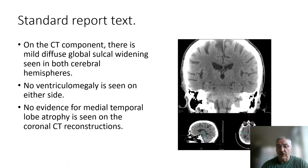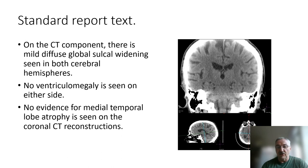The third component of the report will be an assessment of the CT scan. We're going to look for sulcal widening — mild, moderate, or severe — and any variation in lobar distribution. We're going to look for ventriculomegaly, and we're going to look at medial temporal lobe atrophy using the Scheltens grading that I will show you.